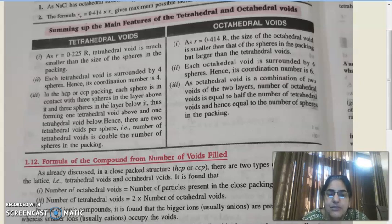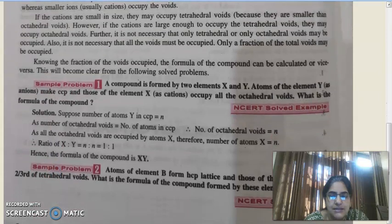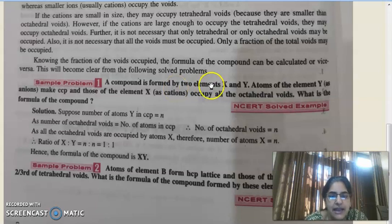Now I am going to the numerical part because this part is very important from exam point of view. This is my first numerical. A compound is formed by two elements X and Y. Atoms of Y as anions make cubic close packing, and those of element X occupy all the octahedral voids. What is the formula of the compound? Very simple. We will solve second type of numerical of this chapter and that is based on voids.